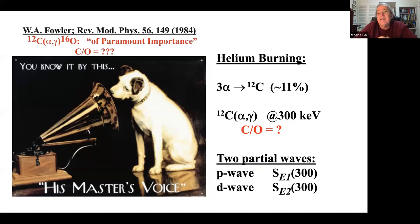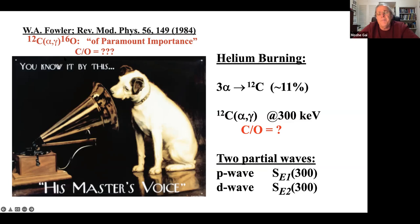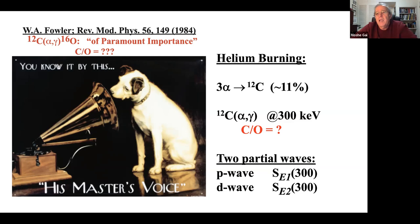Willie Fowler at his 1984 Nobel Prize speech at the APS meeting declared C12(α,γ) - carbon-12 plus alpha making oxygen-16 plus gamma - the 'problem of paramount importance.' In helium burning, we create both carbon and oxygen: three-alpha makes carbon-12 (known to 11% uncertainty), but carbon-12 plus alpha making oxygen-16 - we don't know.